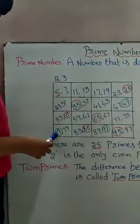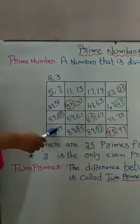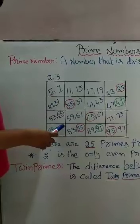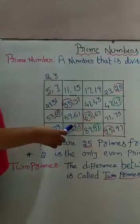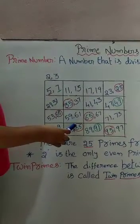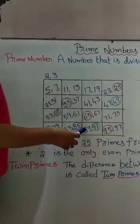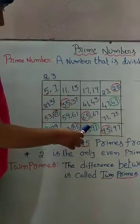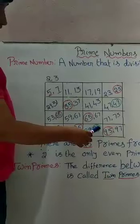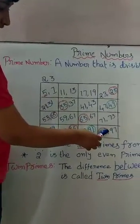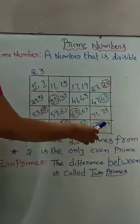77 plus 2 is 79. 79 plus 4 is 83. 83 plus 2 is 85. 85 plus 4 is 89. 89 plus 2 is 91. 91 plus 4 is 95. 95 plus 2 is 97.